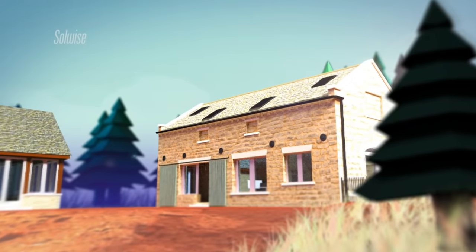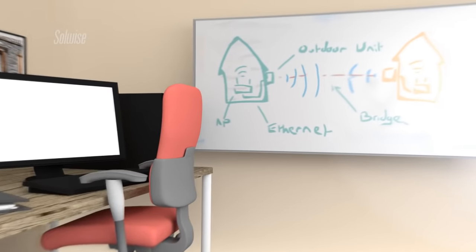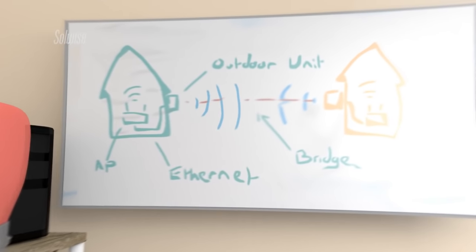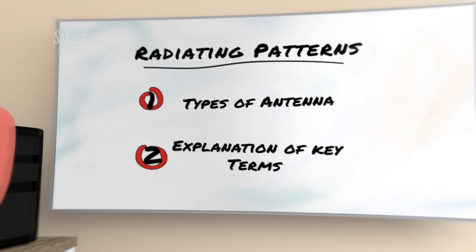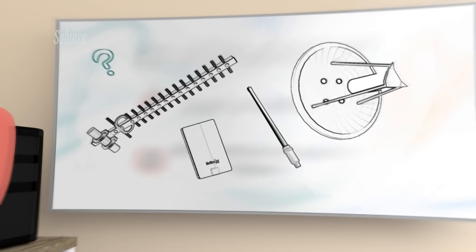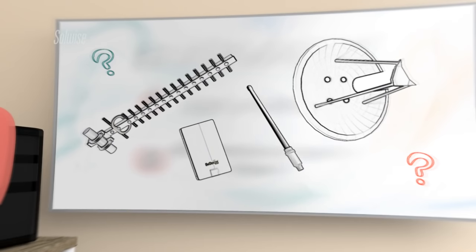Solwise carry a wide range of antennas for WiFi, 3G and 4G mobile data applications. This short introduction should help the uninitiated make some sense of the types of antenna that we carry and explain some of the terms listed in the specifications for them. This should help you in making a selection to best meet your needs.